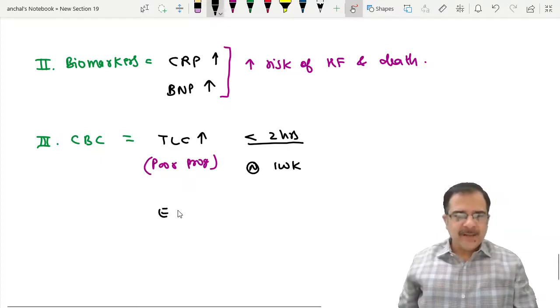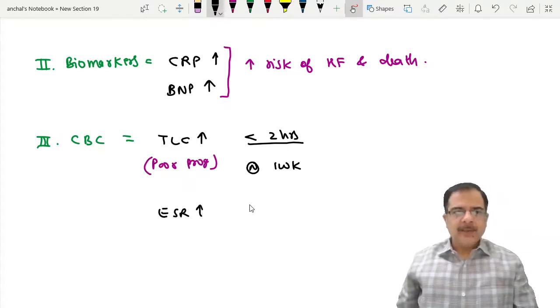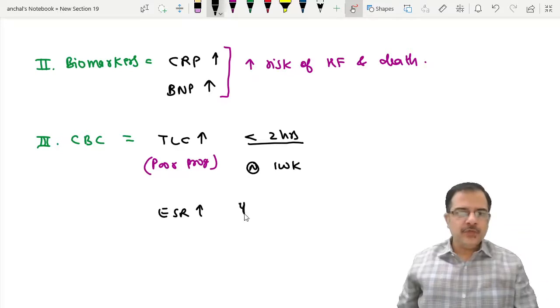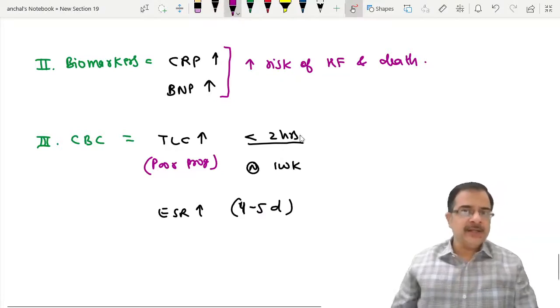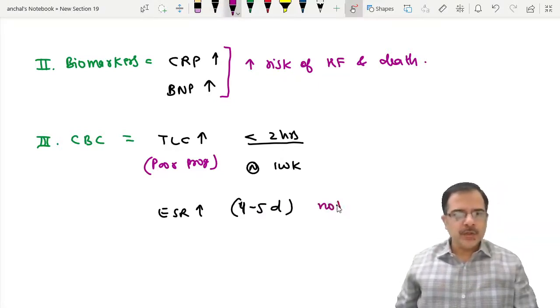ESR is high, but it is slow to increase. It peaks on the fourth to fifth day of MI. Surprisingly, this is not associated with poor prognosis.